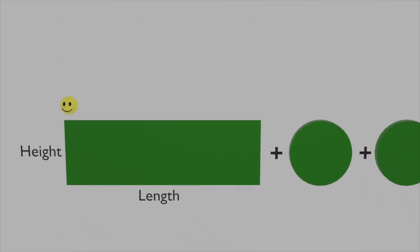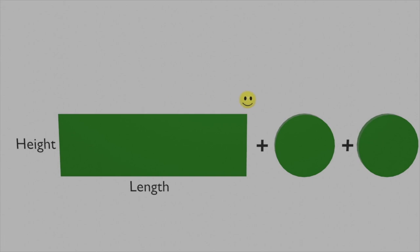Again, the length is just the circumference of a circle, which is 2πr, where r is just the radius of the cylinder.